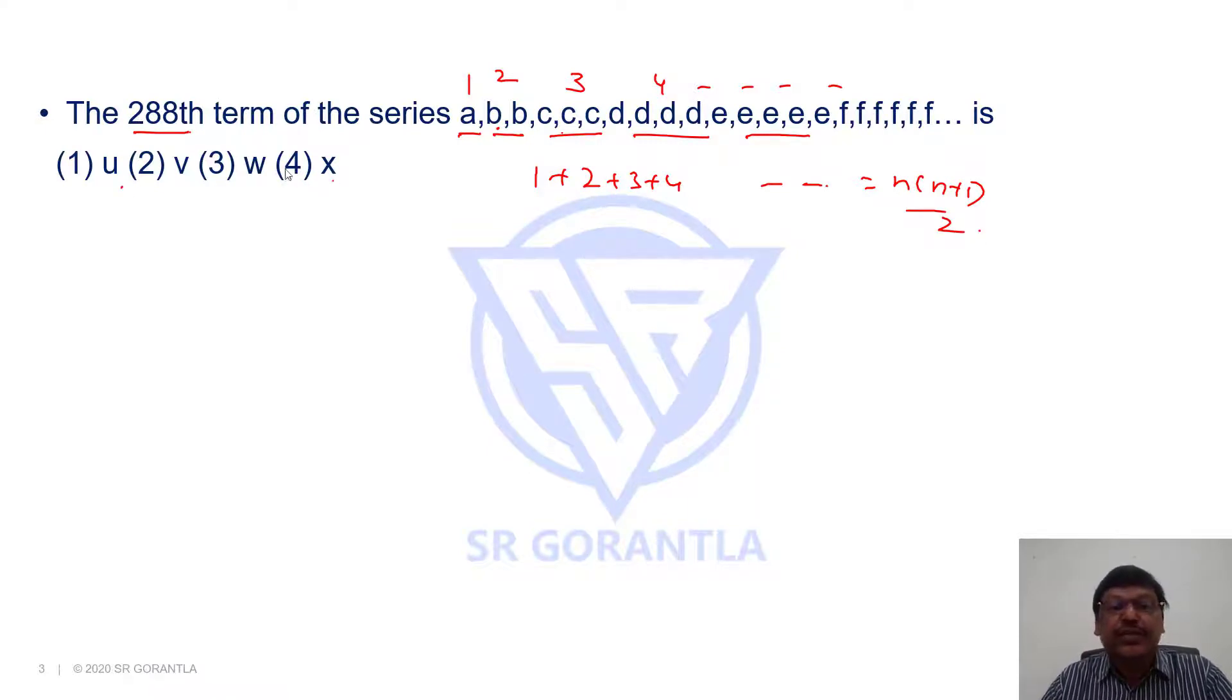Here options are u, v, w, x. U is the 21st letter. So that means before that if I write t which is 20th letter, t could have been written 20 times.